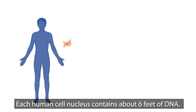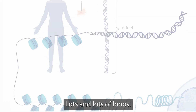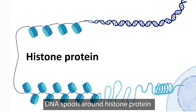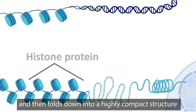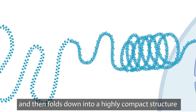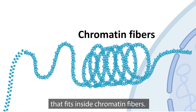Each human cell nucleus contains about six feet of DNA. How does all that DNA fit inside a nucleus? Lots and lots of loops. DNA spools around histone protein and then folds down into a highly compact structure that fits inside chromatin fibers.